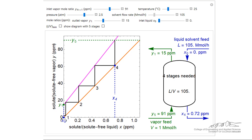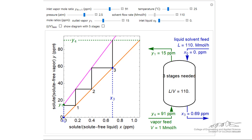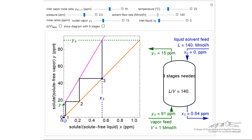This is a tradeoff we will see multiple times in this class, with capital costs, the size of the column, inversely related to the operating cost, the cost of the solvent.